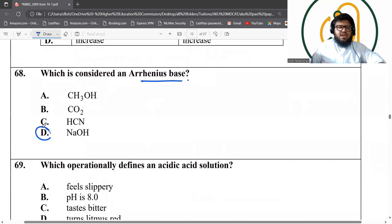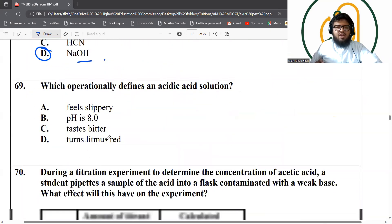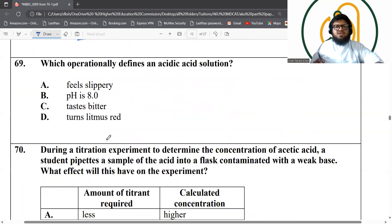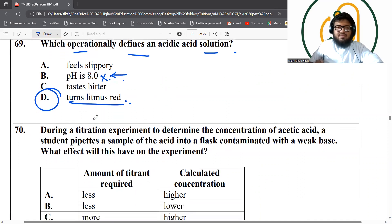What is considered Arrhenius base? NaOH is the only Arrhenius base because it's going to produce OH negative ions in aqueous solution. That's the definition of an Arrhenius base. Which operationally defines as an acidic solution? pH 8 is acidic, but it's not an operational definition. Turns litmus red. And again, not all acids have a pH of 8, but turns litmus red. This is a property common to all acids. Therefore, this is the best answer.